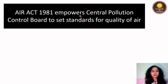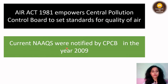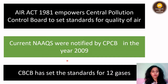The Air Act 1981 empowers the Central Pollution Control Board to set standards for quality of air. The standards are set up by the Central Pollution Control Board. Also, the current NAAQS were notified by CPCB in the year 2009. The latest standards have been defined in 2009. CPCB has set the standards for 12 gases, and there are particularly 12 air pollutants for which standards have been defined that you need to remember.